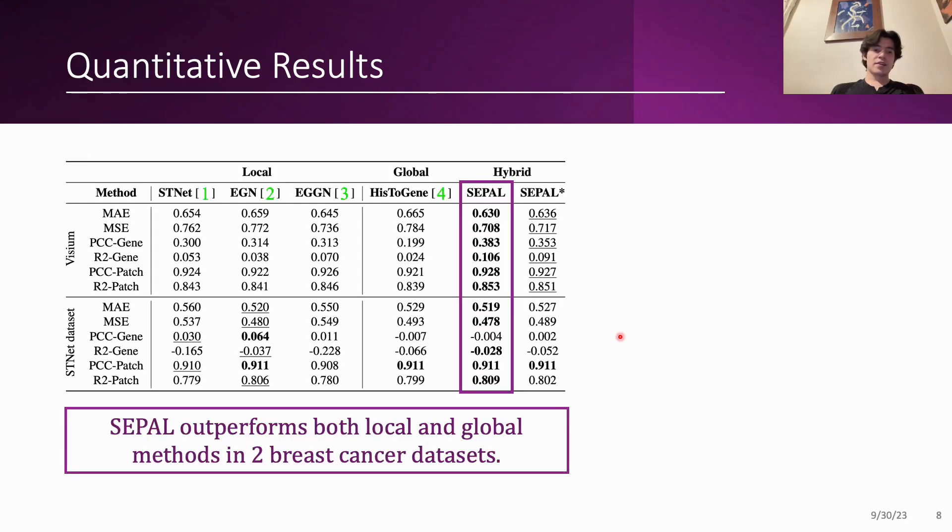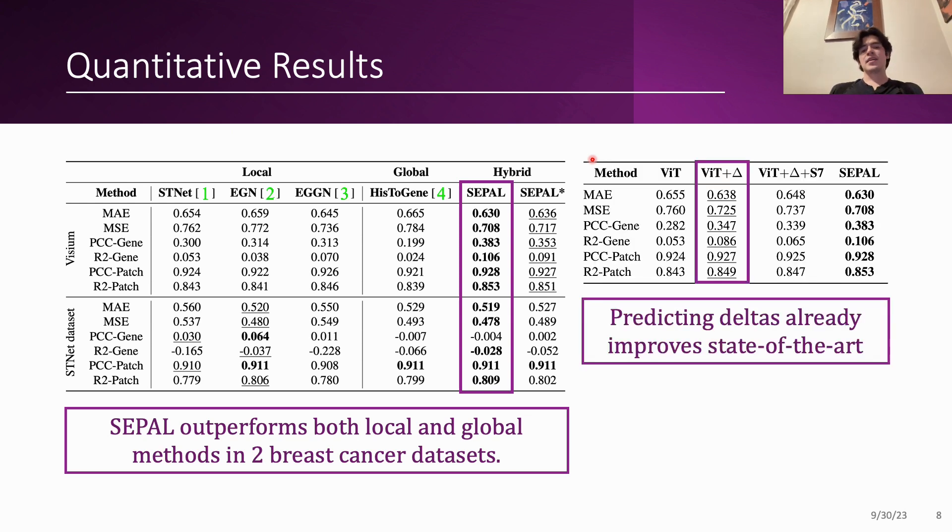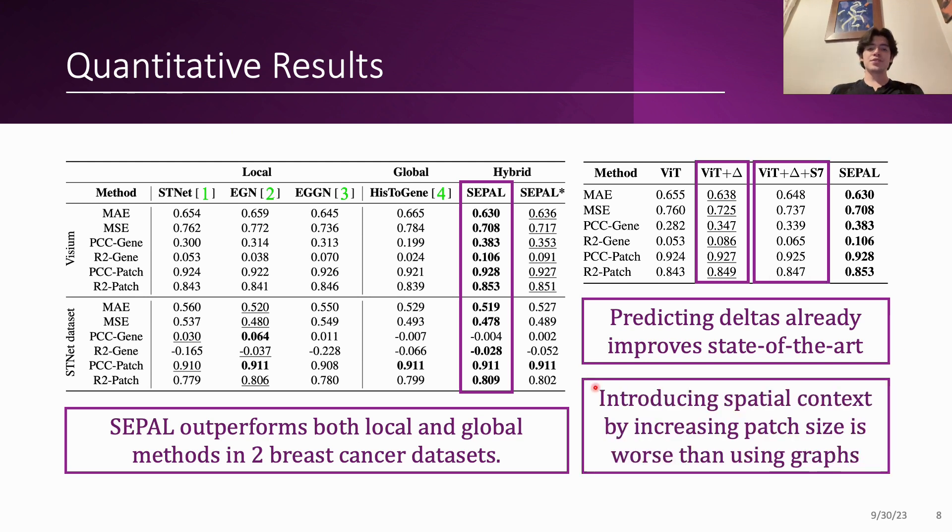With this, here I can show you some quantitative results. First, we outperform all methods in tuberous cancer datasets and the ablation study showed that just predicting deltas already improves the state of the art and that introducing spatial context by increasing the patch size is worse than our approach, which is using the graphs.